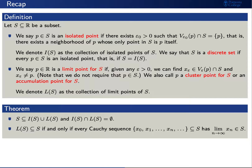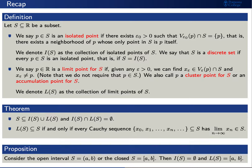L(S) is contained in S — that is, every limit point of S is actually a point of S — if and only if every Cauchy sequence in S has a limit in S. As a couple of examples, if S is either the open interval from a to b or the closed interval from a to b, then S has no isolated points and the collection of limit points of S is the closed interval from a to b.